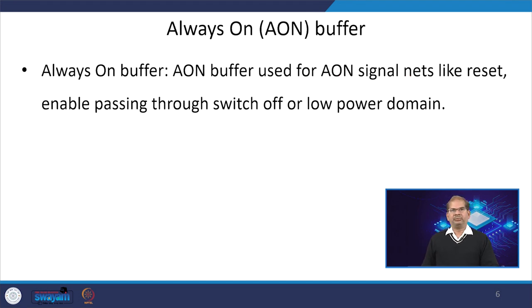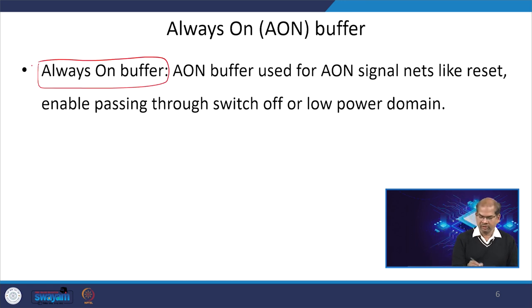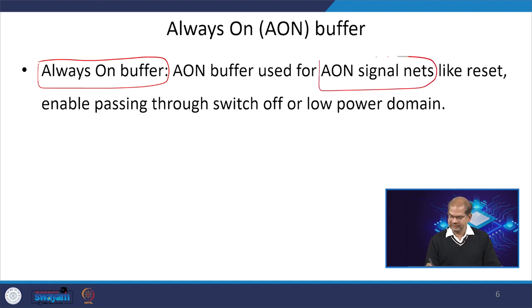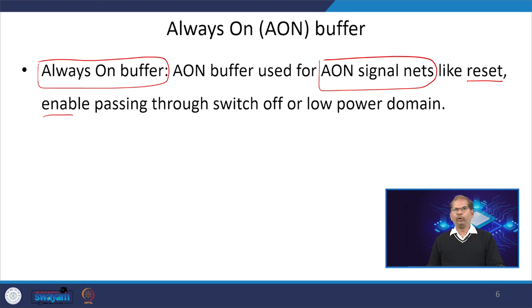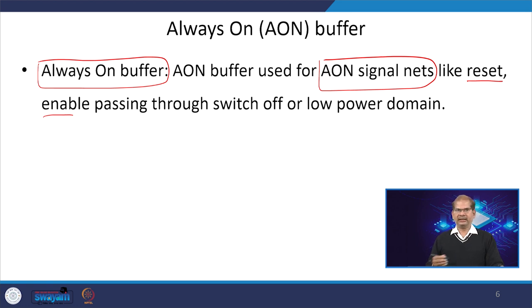The always-on buffer will be used whenever we have always-on signal nets. Always-on signal nets include reset and enable. These reset and enable signals pass through the low power domain. Whenever the local power supply is off, the always-on buffer will remain on through the global power domain and will keep the reset and enable signals active within the low power domain.